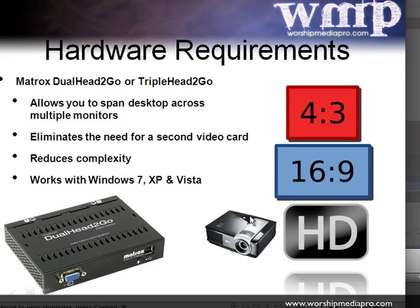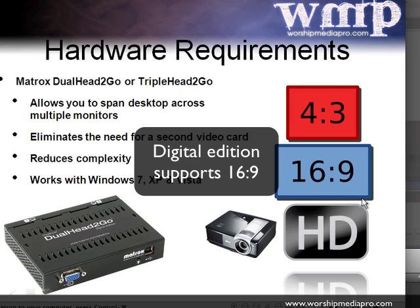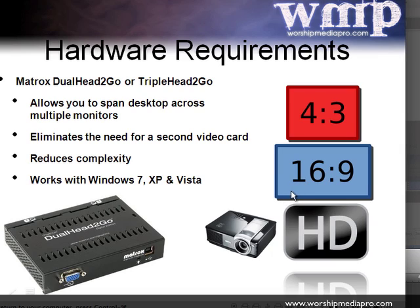Some hardware requirements are necessary to create the foldback display. You can use a secondary adapter, but it becomes cumbersome with your operating system to configure and set up. To simplify things, it's best to incorporate an external device called the Matrox dual head to go — specifically the digital edition. You want the digital edition because it supports the 16:9 aspect ratio. If your projector today doesn't support 16:9, the next one you get likely will. This projects HD quality videos such as 720p or 1080p on 16:9, while standard definition uses the 4:3 aspect ratio.